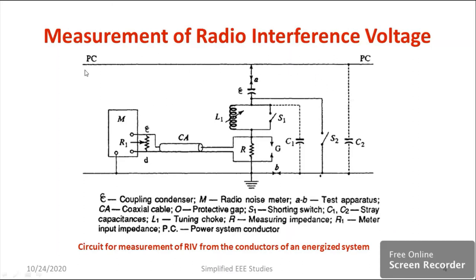Suppose a high frequency signal is generated from the power system conductor. Immediately you will get the signal across the particular resistor. That signal will be directly passed through the coaxial cable to the particular radio interference meter. So we will come to know whether it is radio interference or EMI. By checking the waveforms and patterns from the meter, we will come to know whether those signals will be responsible for radio interference or not. This setup is used for the measurement of the conductor.